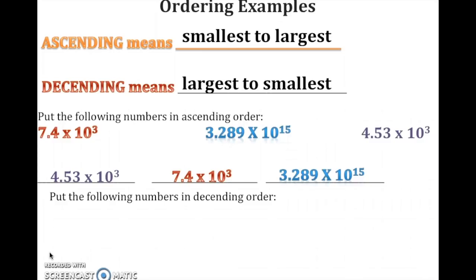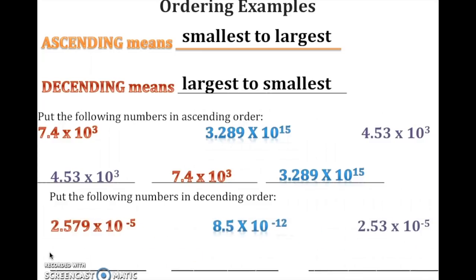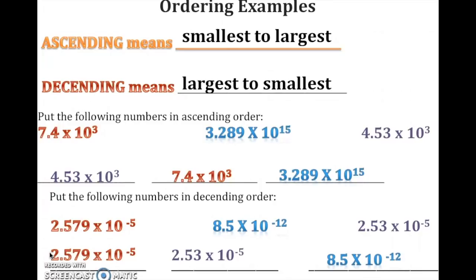Now let's put the following numbers in descending order — largest to smallest. The powers are 10 to the negative 5th, 10 to the negative 12th, and 10 to the negative 5th. Two powers are the same, so compare the decimal factors: 2.579 and 2.53 — think of money: $2.58 versus $2.53. In descending order: 2.579×10⁻⁵, 2.53×10⁻⁵, then 8.5×10⁻¹². Remember, when working with negative numbers, the closer the number is to zero, the larger the number is.